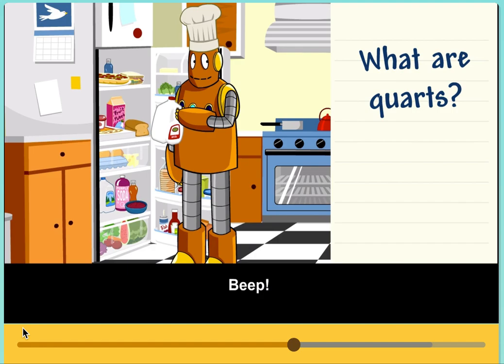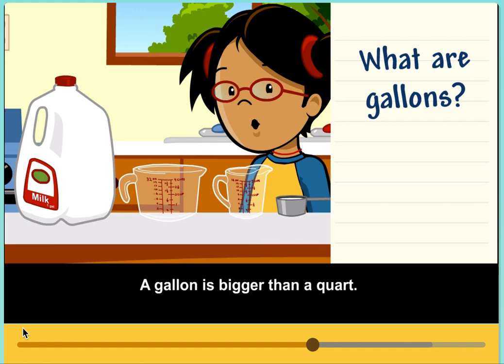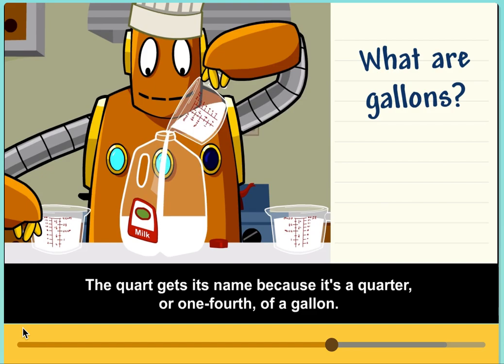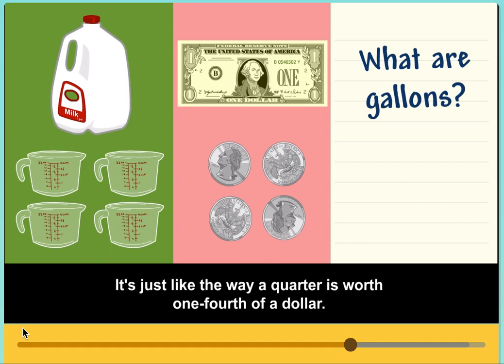What are gallons? You can use gallons to measure larger amounts. A gallon is bigger than a quart. One gallon is equal to four quarts. The quart gets its name because it's a quarter or one-fourth of a gallon. It's just like the way a quarter is worth one-fourth of a dollar.